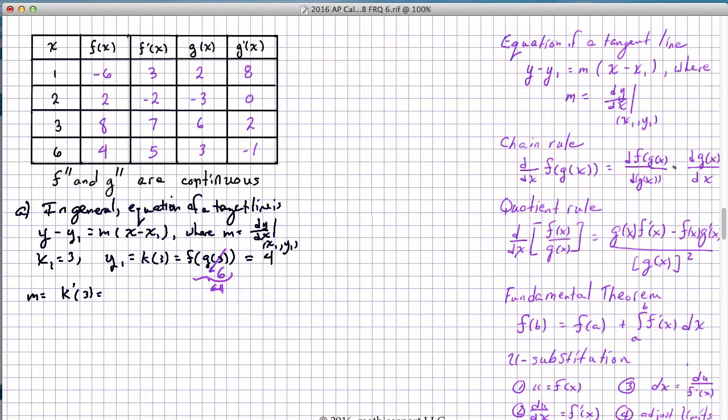Now, a key fact about the chain rule that comes into play here is that we first take the derivative of the so-called outer function, but we take it with respect to the inner function. And that means that we're evaluating it at the value where the inner function is evaluated at x equals, in this case, 3. And so what that all means is we have g of 3 equals 6.